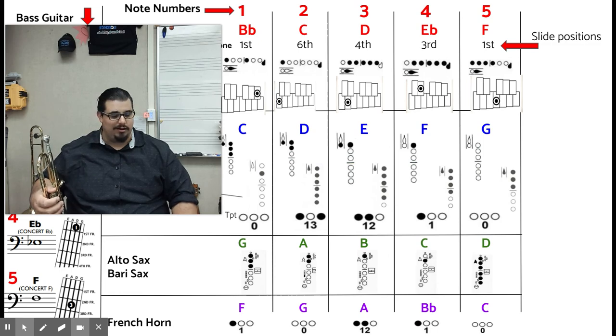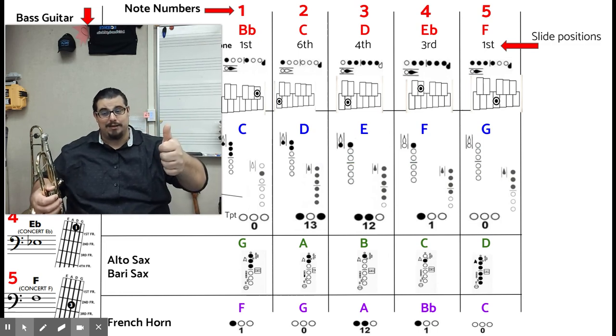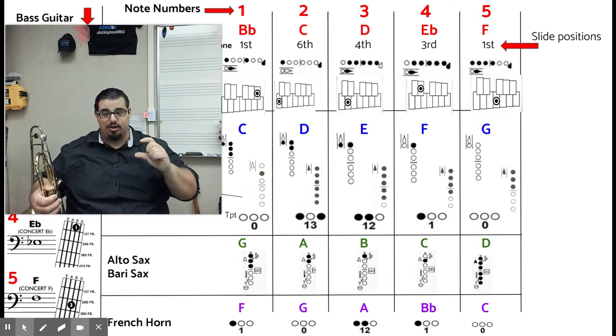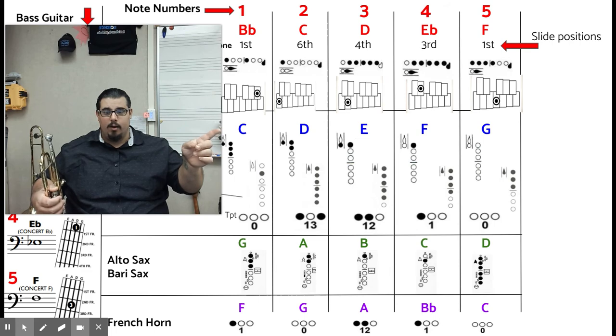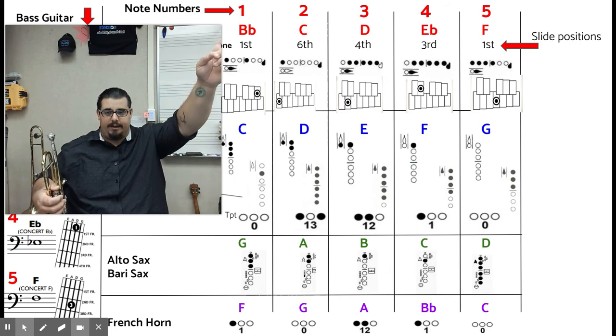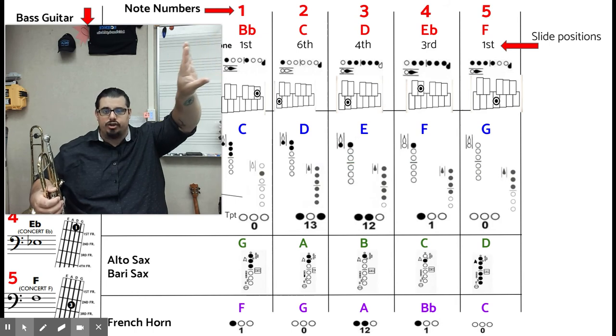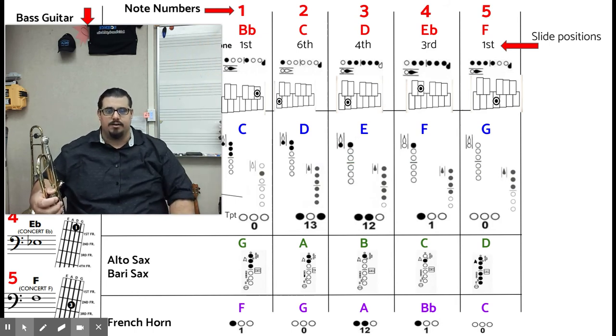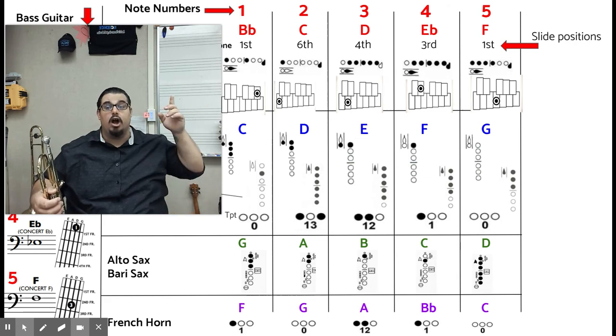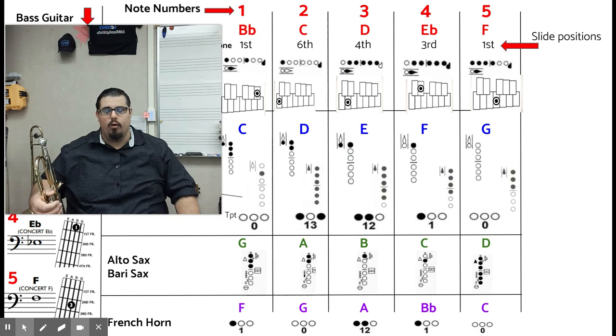Just so you know, if you're using a tuner, that's what I would suggest, to make sure that your notes are accurate and you're getting the right notes. But the tuner is going to read these top notes in red. These are what we call concert notes, concert pitch, concert B-flat, concert C, concert D, concert E-flat, and concert F in our red notes. One, two, three, four, five.